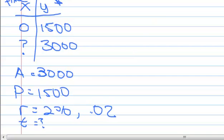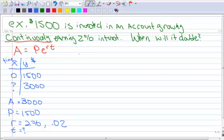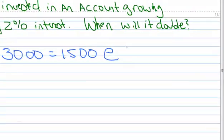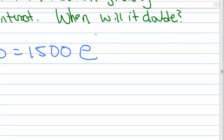So let's set up our equation. Again, we're using PERT. So A is $3,000 and P is $1,500, E raised to the power of 0.02 times T. And feel free to put that in parentheses, because all that's got to stay together. We're solving for T.